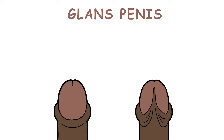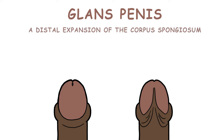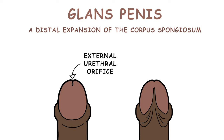Finally, the glans is the penis's most distal portion. It is a distal expansion of the corpus spongiosum and features the external urethral orifice, which is the opening of the urethra.